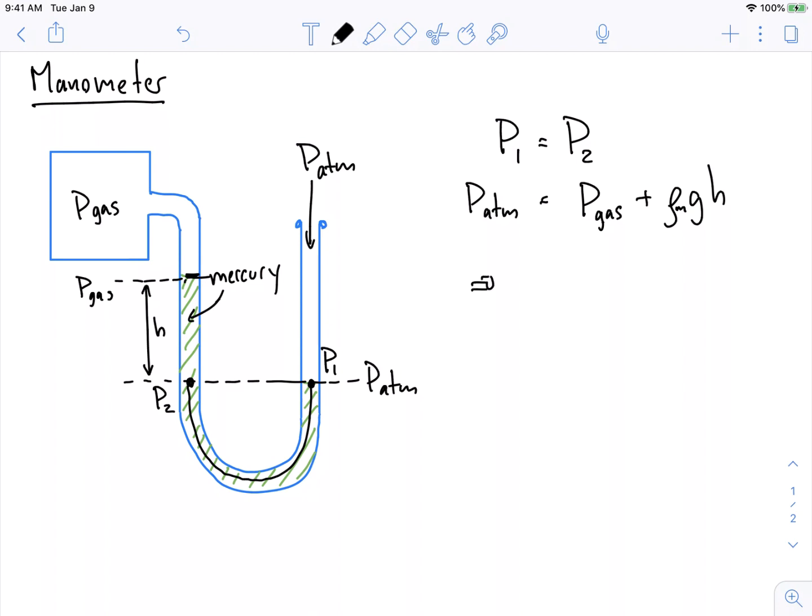So we can turn this around, and we can say that the pressure of the gas in this situation is equal to P0, or P atmospheric, minus rho g h. So the pressure of this gas is actually less than atmospheric pressure.